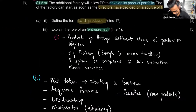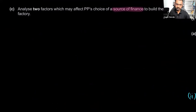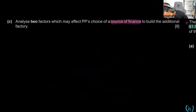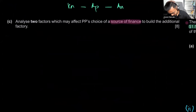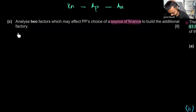Now we get to Part C about sources of finance. Since this is an eight-mark question, we need to talk about knowledge, application, and analysis only — there's no need for evaluation in an eight-mark question. It's always a good idea to first divide your question into these elements. The question is: analyze two factors which may affect PP's choice of a source of finance to build the additional factory.